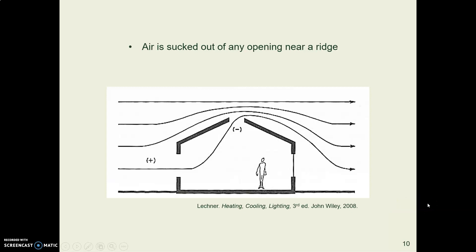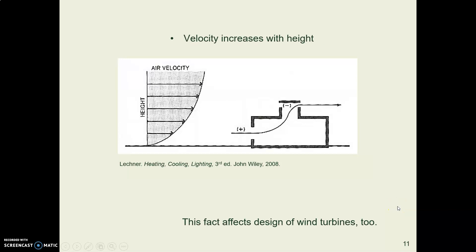In addition, if there's an opening in the ridge of a roof, air will be sucked through the building. Air moves faster across the top of a building, and wind blows faster the higher up you go — we'll see that again when we talk about wind turbines. So if you are using stack ventilation and get your stack up higher in the air, you'll get greater wind velocity and greater air movement.